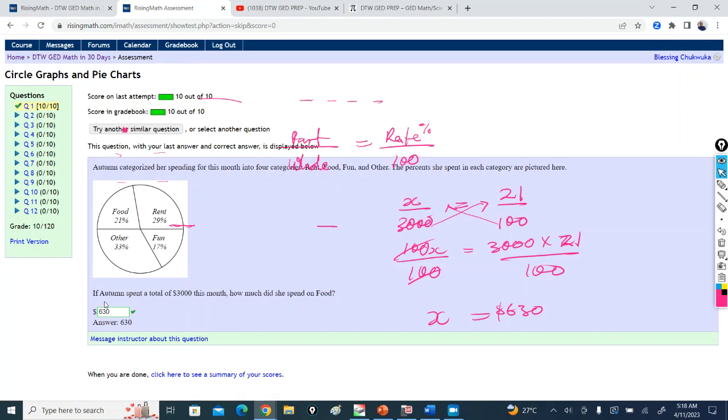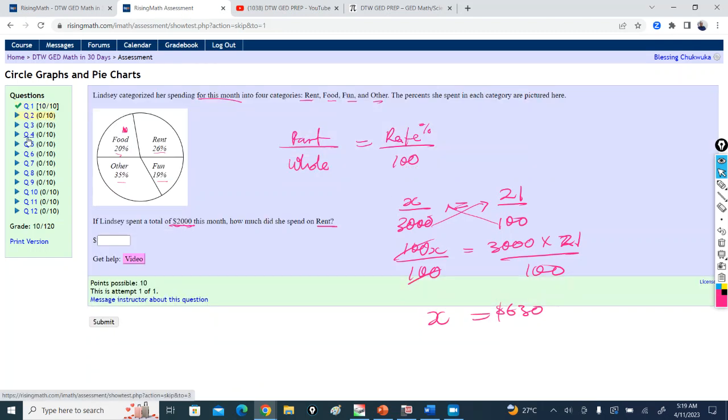So we got the answer here. So next time we're going to also treat another topic. You can have several practice here. There's several practice to make you perfect in circle graph because circle graphs in the GED test always ask questions like this. They give you the percent and tell you to find the amount of something else. So it's the percentage formula that you use to find out.